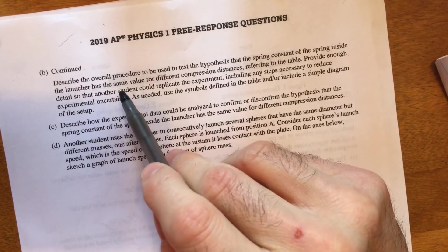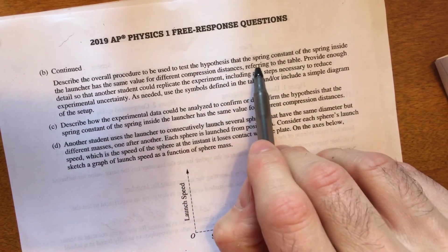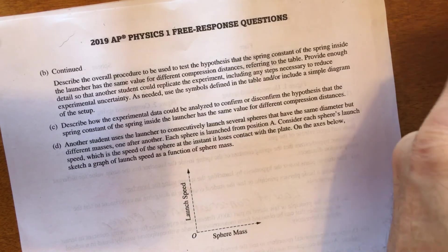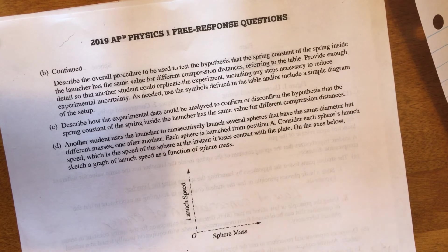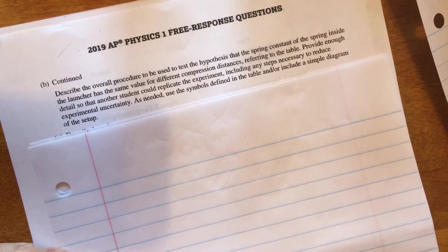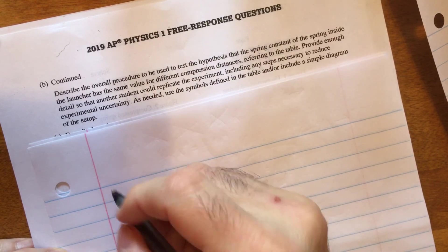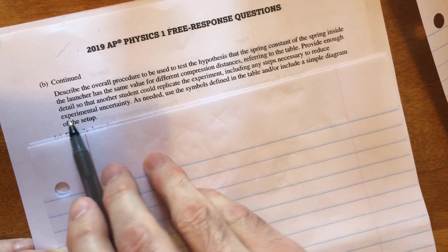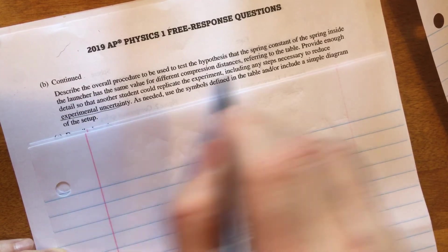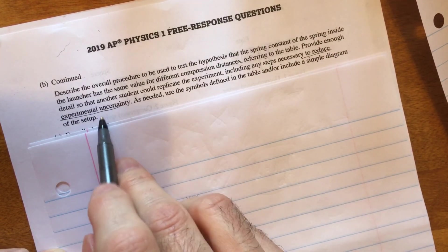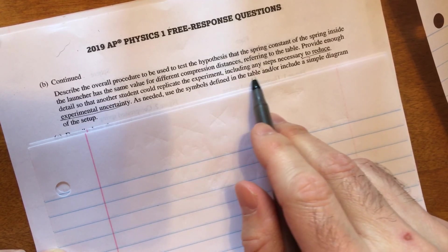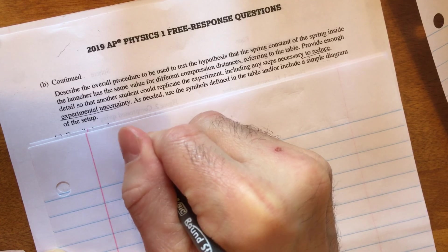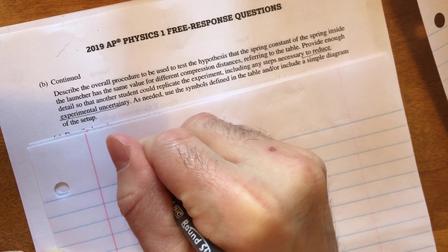So now I want to go ahead and describe the procedure to be used to test the hypothesis. These are supposed to be really designed to be really obvious and really straightforward. So make sure you're not going crazy with your explanation. Four or five lines, maybe bullet points, will be fine. So also they want to know, provide enough details so that another student could replicate the experiment, including any steps necessary to reduce experimental uncertainty. To reduce experimental uncertainty, you'd want to do multiple trials. Also, as needed, use the symbols defined in the table or include a simple diagram of the setup. I really encourage you guys to do that. Include a simple diagram of your setup.